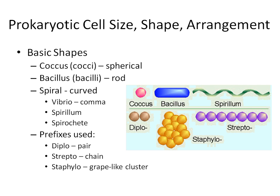Your three basic shapes are coccus, bacillus, and spiral. A coccus-shaped cell is spherical — when you look at it on a microscope, it looks like a circle. A bacillus-shaped cell is rod-shaped. The bacillus can vary a lot in size, which throws a lot of people off under the microscope. You may have a tiny bacillus, a really long and skinny one, or a really fat one — but they're all still considered bacillus-shaped bacteria.